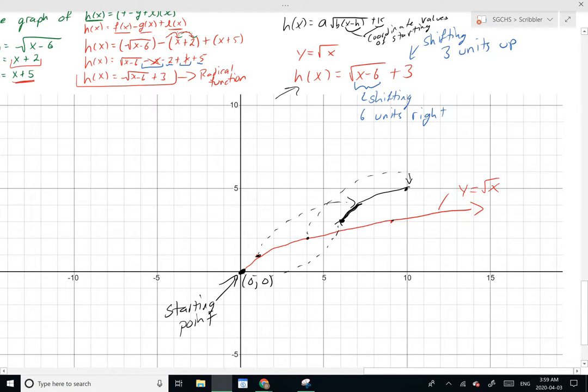And then lastly, this should be shifted 6 units to the right. So 1, 2, 3, 4, 5, 6, and then 3 units up. 1, 2, 3. And then it will go on forever. So this is h(x). And we have graphed that function.